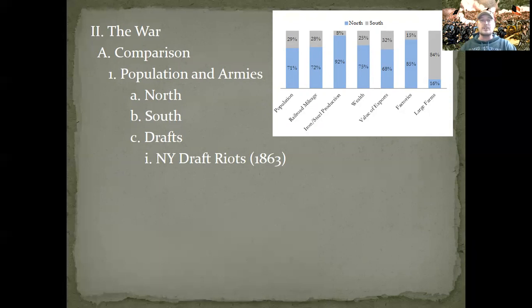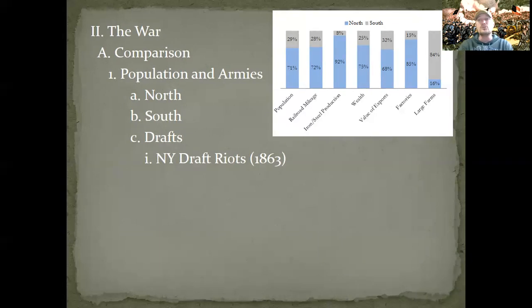First, population — perhaps the most important distinguishing factor. The North had 22 and a half million people. The South had a total of 9 million white people. Now there were another 4 million people in the South, but they're all enslaved, and you best believe they are not going to be handing them weapons immediately.